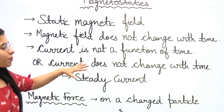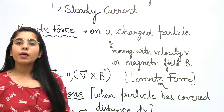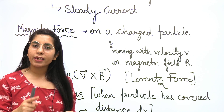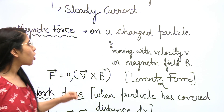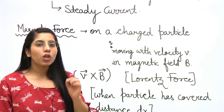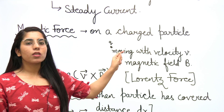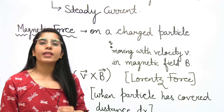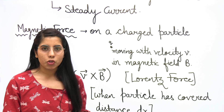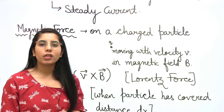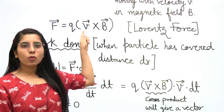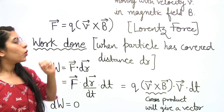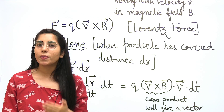Now, after knowing the basics of magnetostatics, we will talk about the magnetic force. If there are charges in motion, corresponding to that we will have a magnetic field. The force on a charge particle having charge q, moving with velocity v in the presence of magnetic field B — this force is called the magnetic force, and its expression is also known as the Lorentz force. That force is: F = q(v × B). V is the velocity, B is the magnetic field, and q is the charge on the particle.